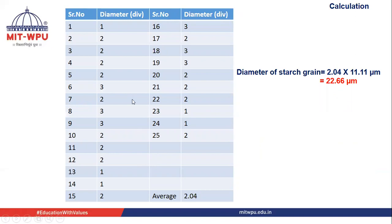Here I have taken 25 readings. For example, the first starch grain fit into one division, the second into two divisions, and so on. We take 25 different readings and calculate the average. Suppose the average comes out to 2.04 divisions. Since we calibrated and found the factor to be 11.11 micrometers per division, the diameter of the starch grains is 2.04 multiplied by 11.11, giving us 22.66 micrometers. By this method, we can measure the diameter of starch grains.